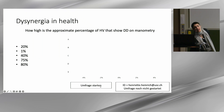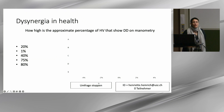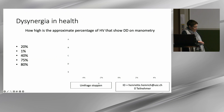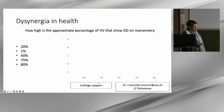I'm starting the poll now — you can start voting. Is it A, 20%? B, 1%? C, 40%? D, 75%? Or the last one, 80%?